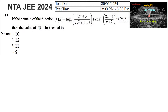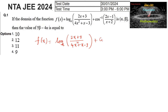If the domain of the function f(x) = log((2x + 3)/(4x² + x - 3)) + cos⁻¹((2x - 1)/(x + 2)) is given as (alpha, beta] where alpha is excluded and beta is included, then find the value of 5 times beta minus 4 times alpha.